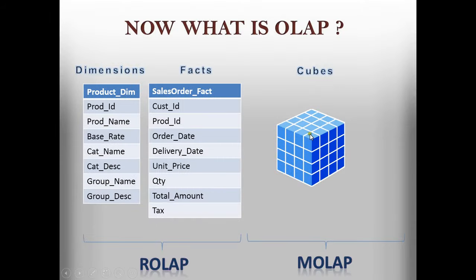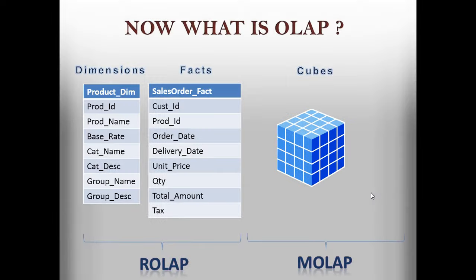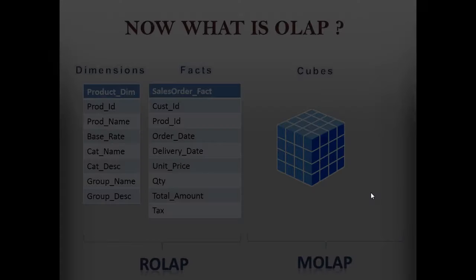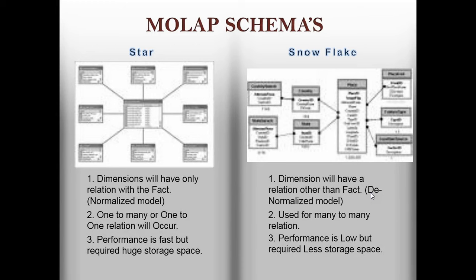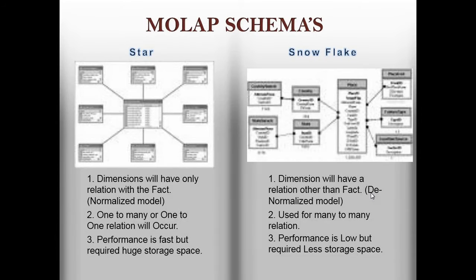Cubes are of two types based on different schemas: star schema and snowflake schema. If you are attending a data warehouse interview, almost every slide discussed here will generate at least two questions — what is OLTP, what is a master table vs. transaction table, what is normalization vs. denormalization, what are dimensions and facts, what is MOLAP and roll-up, what is a cube, what is star schema and snowflake schema — these are all highly asked interview questions.